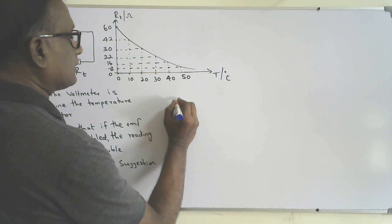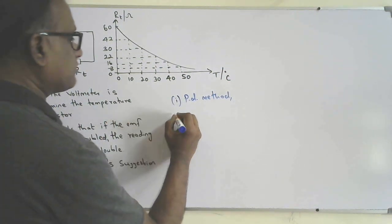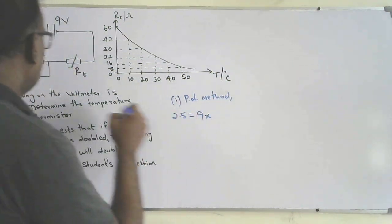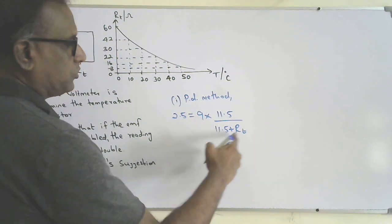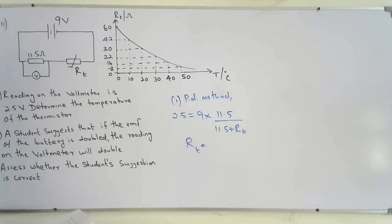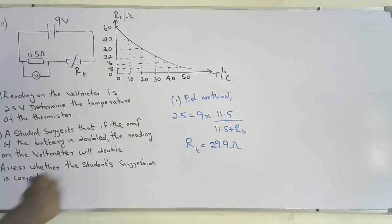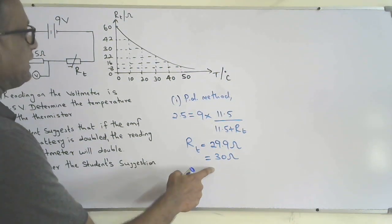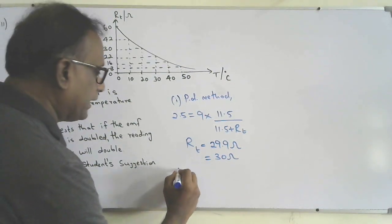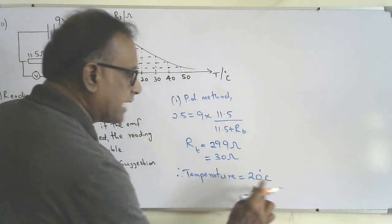Using the potential divider method: 2.5 equals 9 multiplied by 11.5, divided by (11.5 plus Rt). Solving for Rt gives approximately 29.9 ohms, which we take as 30 ohms. Using the graph, a thermistor resistance of 30 ohms corresponds to a temperature of 20 degrees Celsius. So the temperature of the thermistor is 20 degrees Celsius.